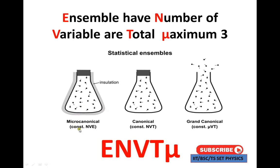The micro-canonical ensemble is represented by a flask with insulation. There are particles, momentum, and energy — the system is isolated. There are walls, volume, and a fixed number of particles in the flask. This system is micro-canonical.